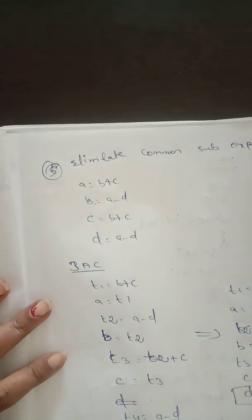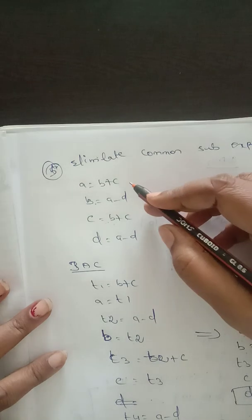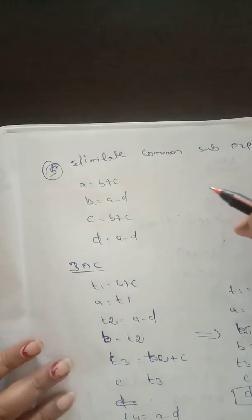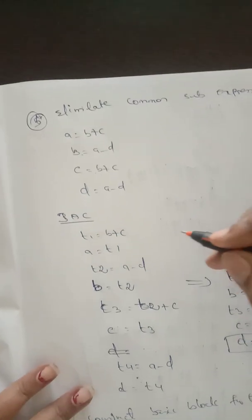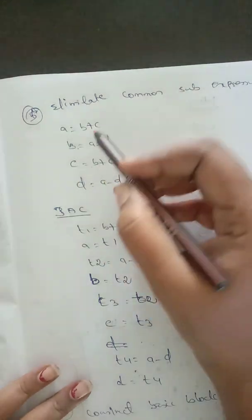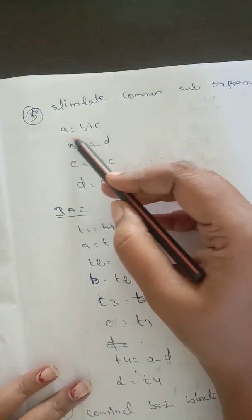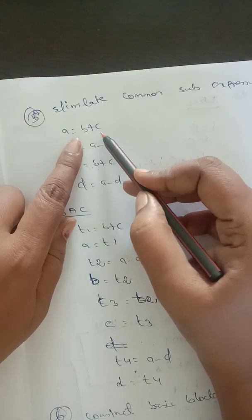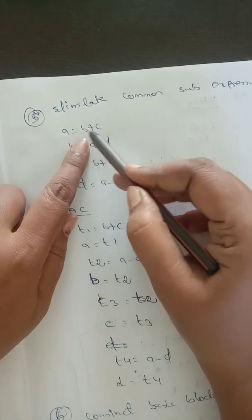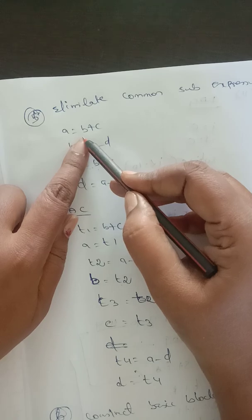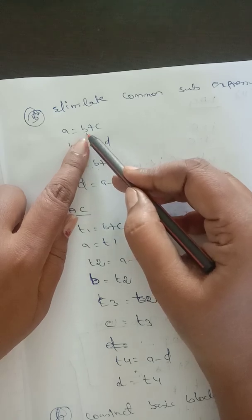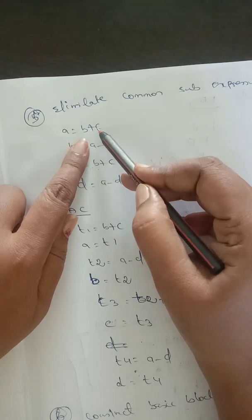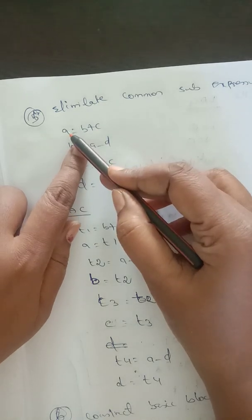To remove the common sub-expression of the given expression, first we have to write three-address code. The first statement is a equal to b plus c. First, using a temporary variable we have to evaluate b plus c and then store the temporary result into the variable a.